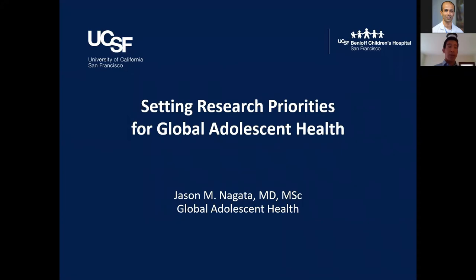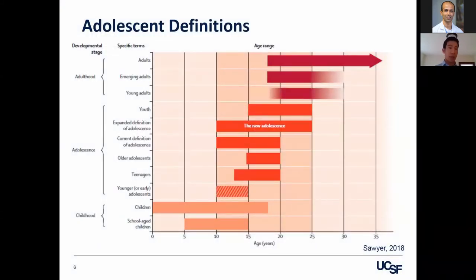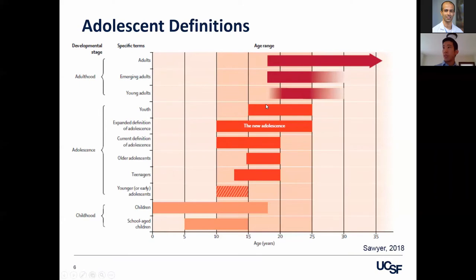As an overview of today's talk, I'm going to cover three didactic sections: the World Health Organization's research priorities for adolescent health in low and middle income countries, research I've done on food insecurity in Kenya, and the International Association for Adolescent Health Young Professionals Network. For each section, I'll start with a formal presentation and then provide some behind-the-scenes lessons learned.